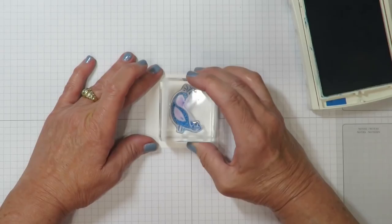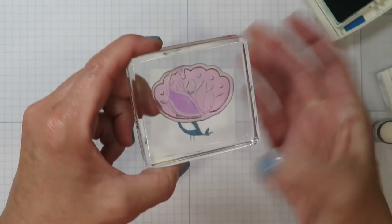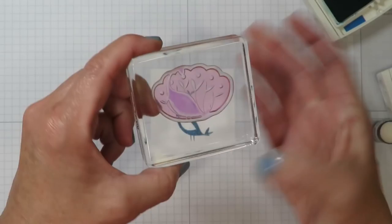I'm going to start with Pacific Point ink. I've mounted the body of the peacock here. So I'll go ahead and ink him up and I'm going to stamp him in the middle of this square.